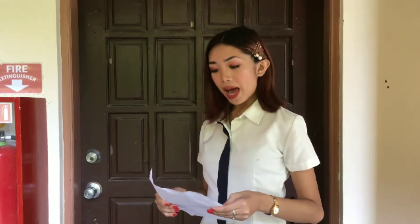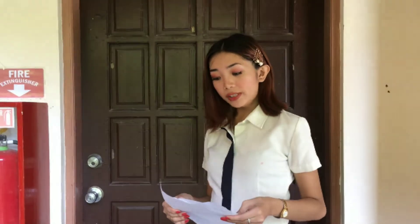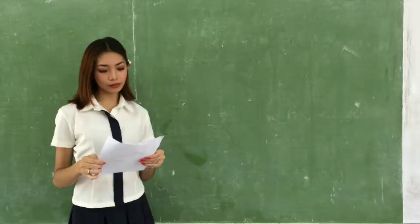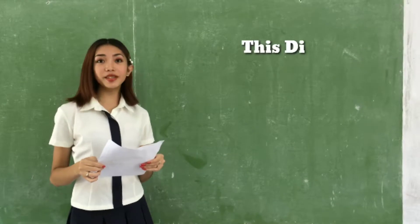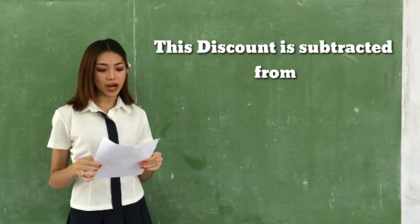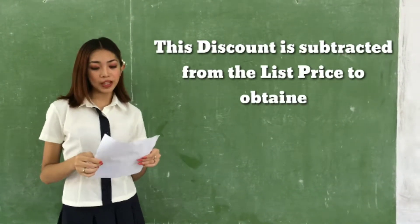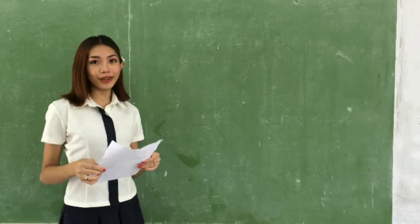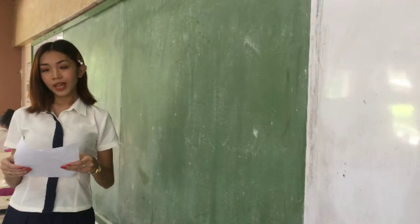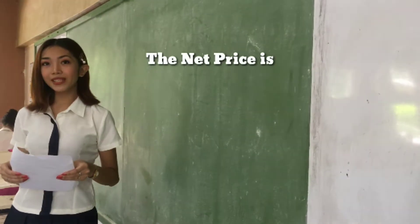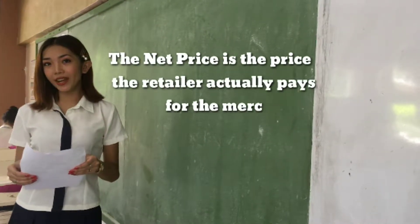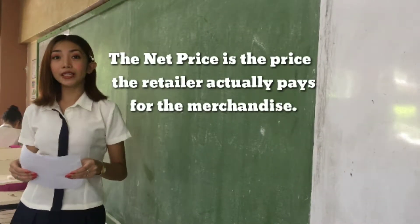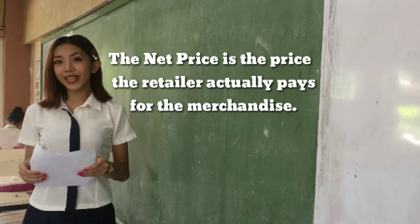The Trade Discount is more commonly applied to the wholesaler's list prices. This discount is subtracted from the list price to obtain the net price, or NP. The net price is the price that the retailer actually pays for the merchandise.